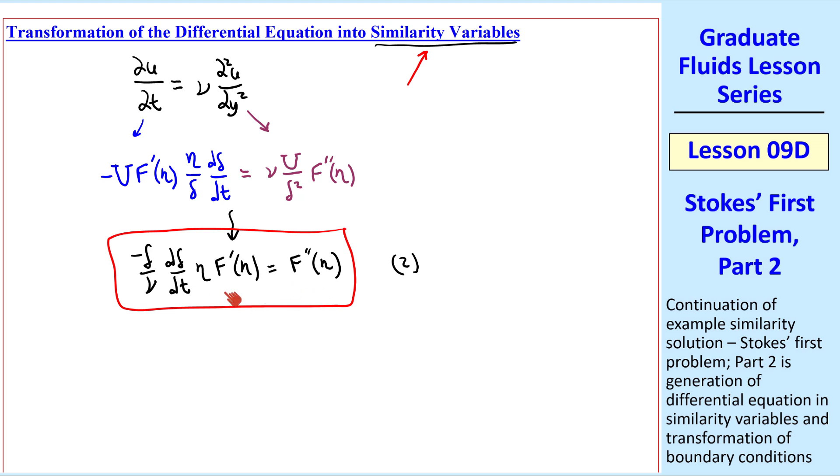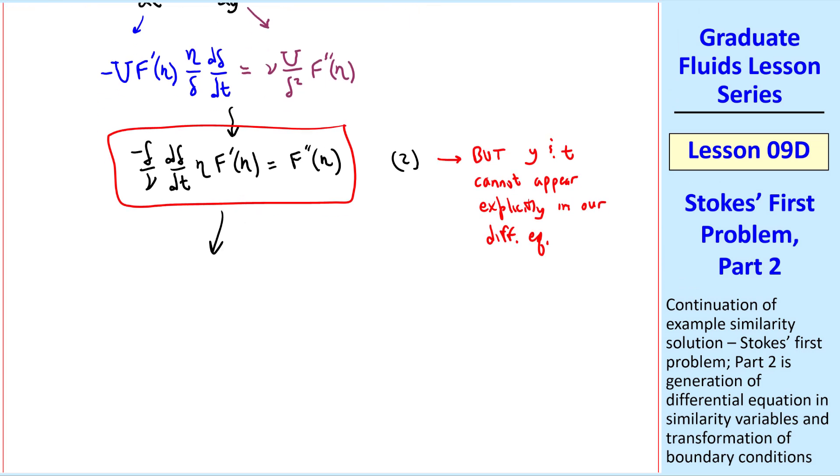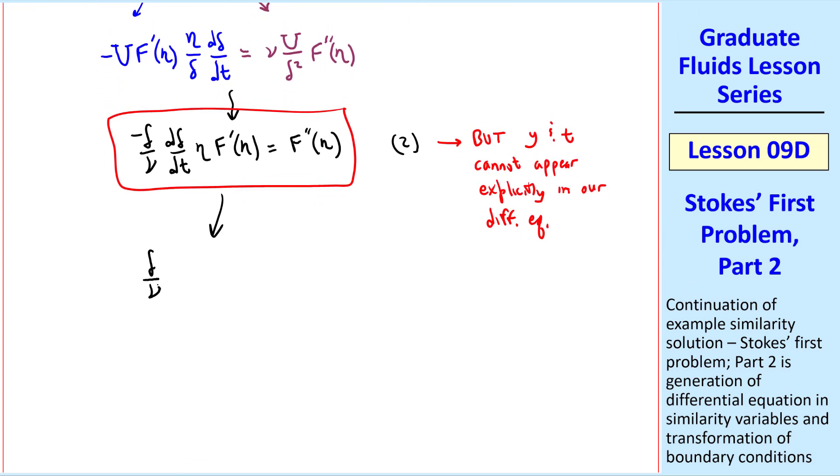With eta as the only independent variable. In other words, y and t cannot appear explicitly in our differential equation. So what can we do? Well, let's try separating variables.